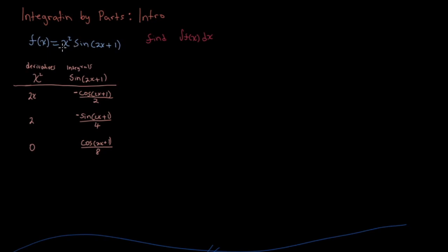So it's going to be a product of a polynomial and something else. To do this, you have to make a table with two columns — one for derivatives and one for integrals. Whenever you're performing integration by parts that involves the product of a polynomial and something else like a sine function, you always want to make sure that you have the polynomial in the derivatives column.